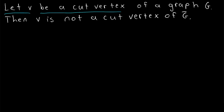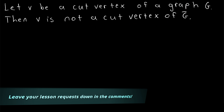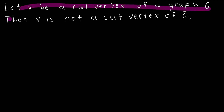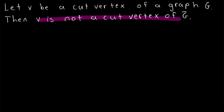Let V be a cut vertex of a graph G. Then V is not a cut vertex of the complement of G. We'll be proving this little graph theory result in today's Wrath of Math lesson. This is another one of those fun results that says if this is true about a graph, then this is true about the complement. If V is a cut vertex of G, V is not a cut vertex of G complement.